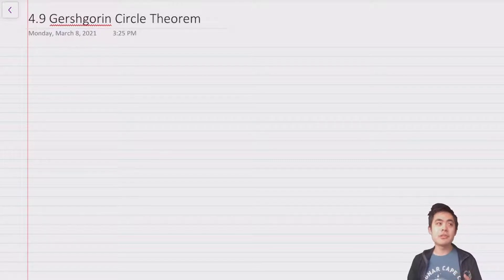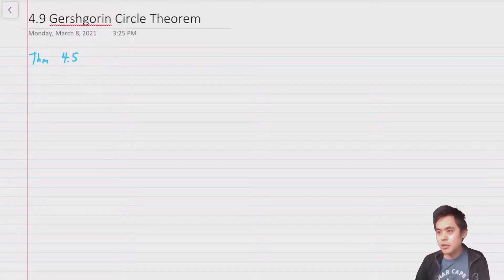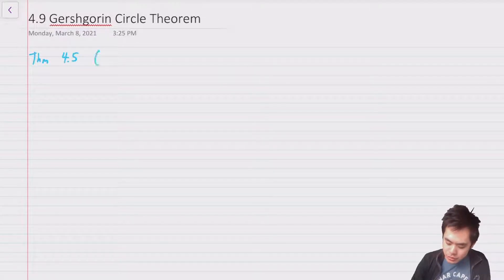And to do this, we're going to make use of something called the Gershgorin circle theorem, which is more general than the things we care about, but it's a general result which you may or may not recall from your linear algebra class. This is going to be theorem 4.5 in Linda Allen's textbook, but you can also find it in basically any standard theoretical linear algebra text.